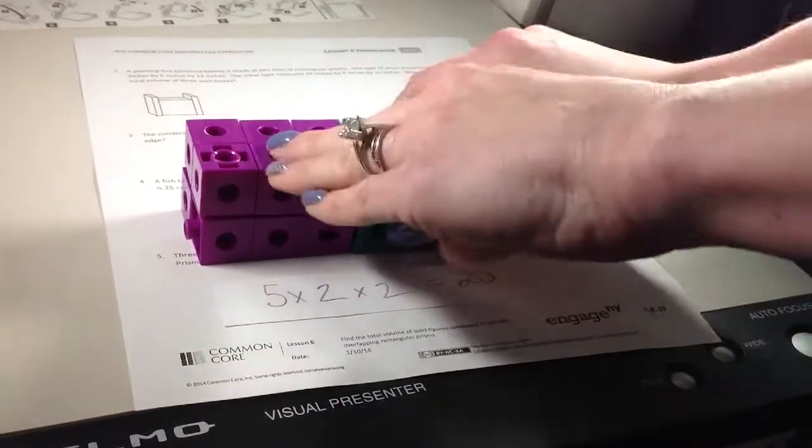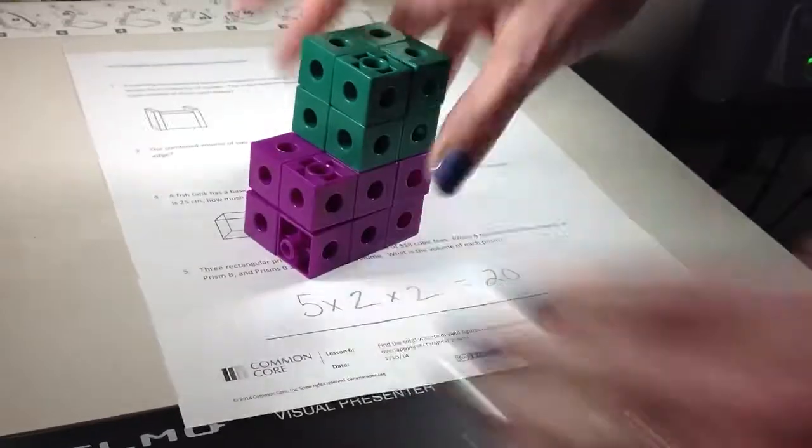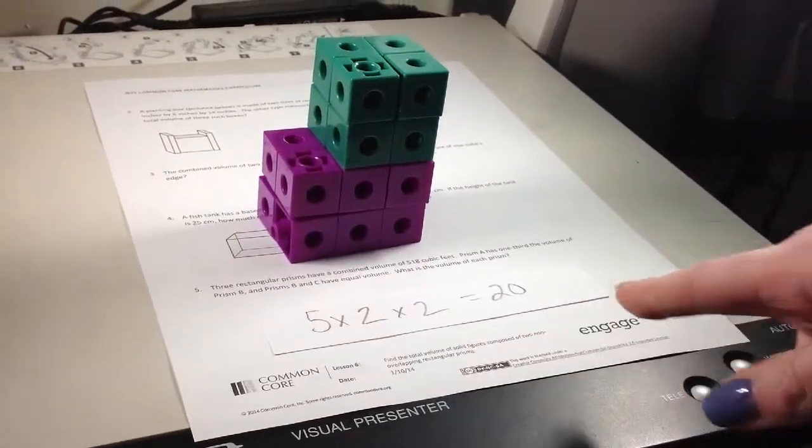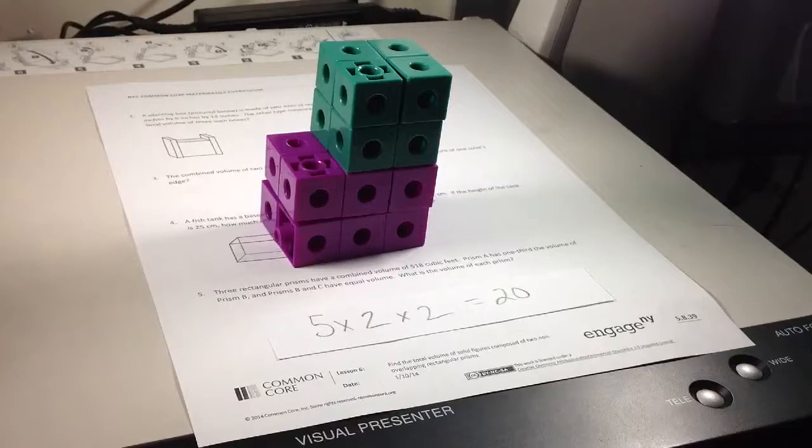Then we talked about sometimes we might have a figure that looks different. It might look like that, which it doesn't work to write a formula for.